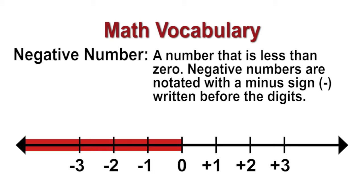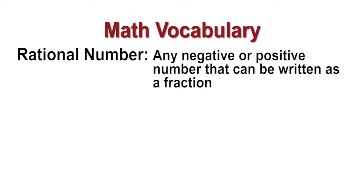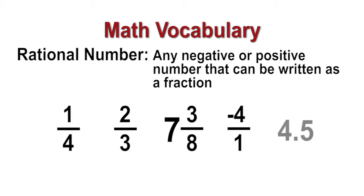Because integers do not contain fractions, the rational number system is introduced. Rational numbers are any negative or positive numbers that can be written as a fraction, such as one-fourth, two-thirds, and seven-and-three-eighths. The number negative four is rational because it can be written as negative four over one. The decimal 4.5 is also a rational number because it can be written as the fraction 45 tenths.